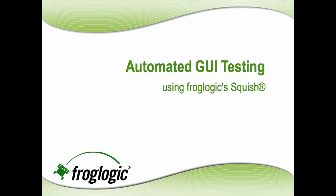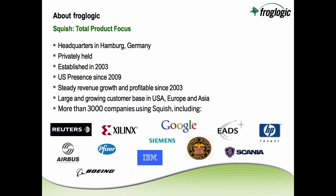Automated GUI testing using FrogLogic's Squish. For those of you not familiar with FrogLogic, we're headquartered in Hamburg, Germany, and are privately held. We were established in 2003 and have had steady revenue growth and been profitable since we were established. For anyone in the Americas, we've had U.S. presence since 2009, and we have a large and growing customer base throughout the world. The icons below represent some of the more than 3,000 companies currently using Squish.